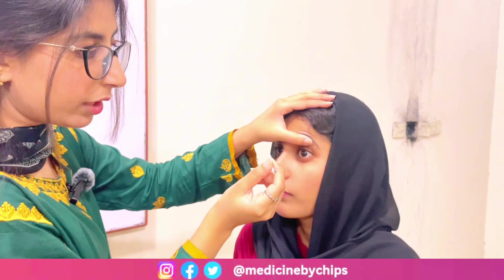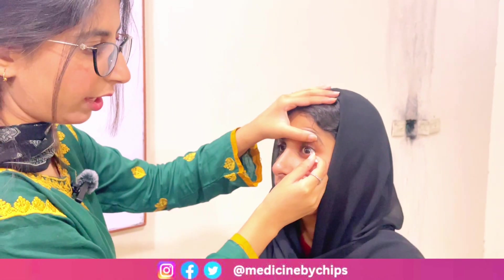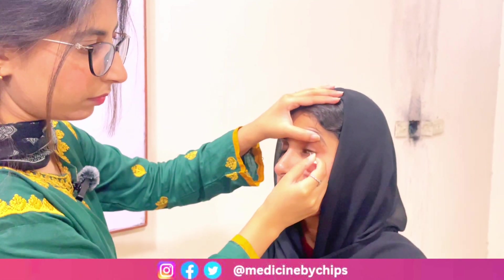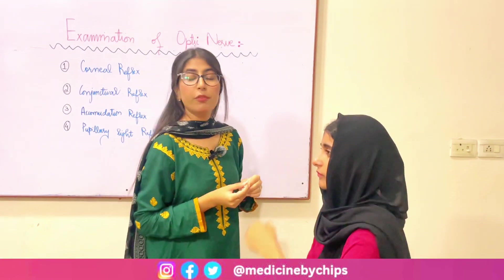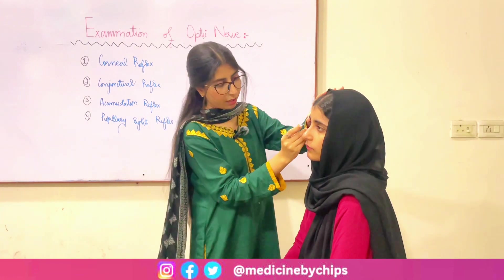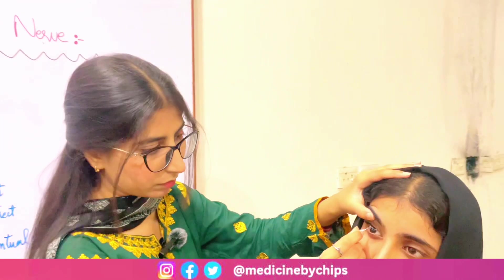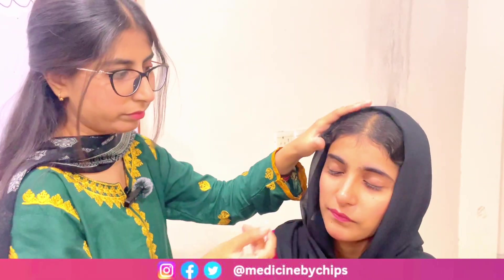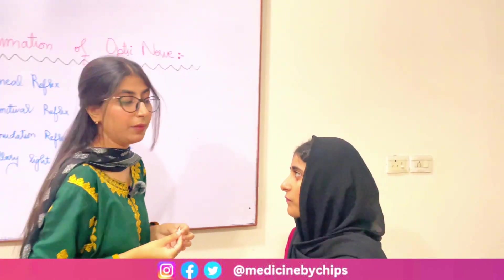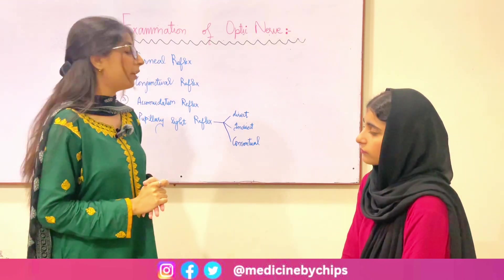For the corneal reflex we have to touch the tip of the cotton at the junction of the cornea and the conjunctiva for a very good response. As you can see, there is a blinking of the eye. We have to perform this experiment bilaterally in both eyes. The afferent for the corneal reflex is the fifth cranial nerve, while the efferent is the seventh cranial nerve.